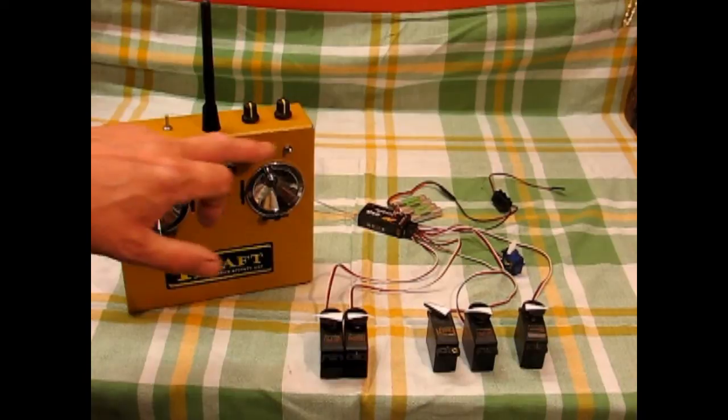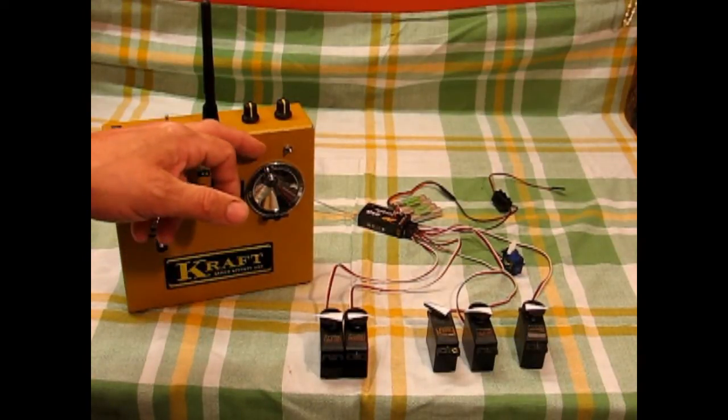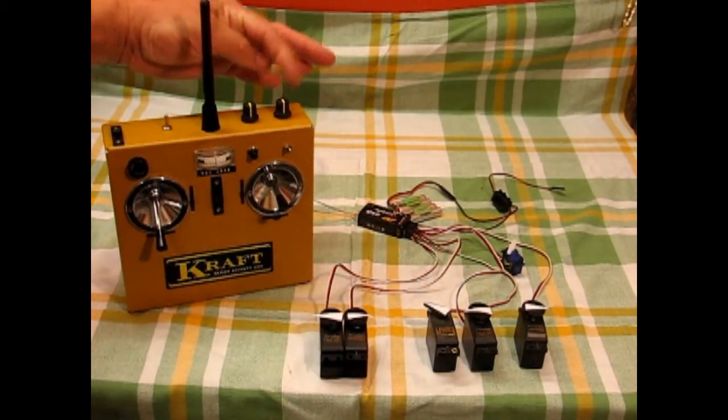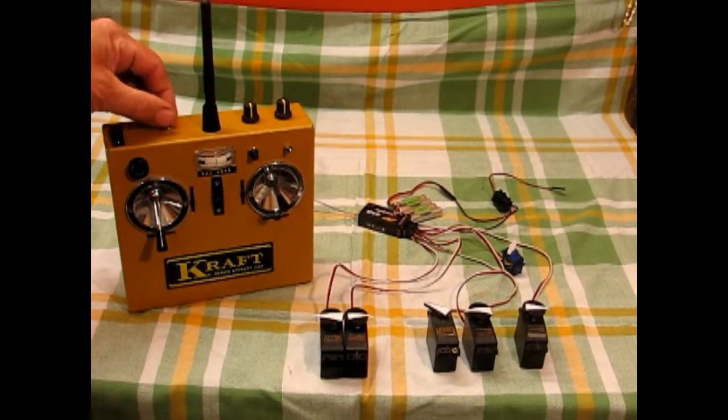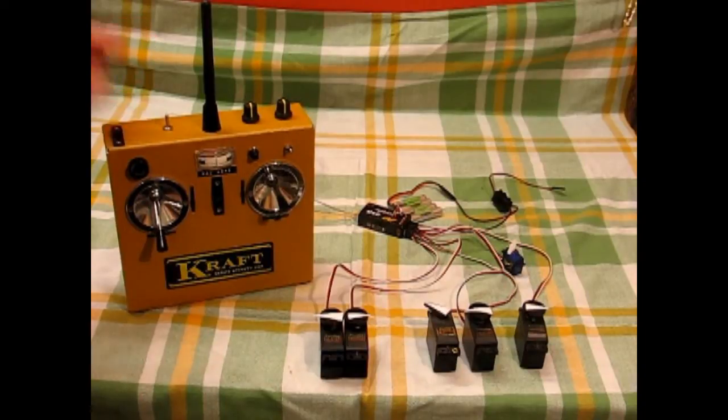So there you go. Four proportional channels, one switched, one momentary, expo rates, mixer, range check function. This is the Frisky one way or two way. And there you go. Looks very well. Cheers.